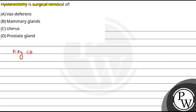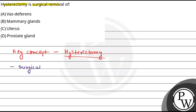So, if we talk about the concept of this question, that will be Hysterectomy. Basically, if we open Hysterectomy, we can say that this is a surgical method, like vasectomy and tubectomy. There is a surgical removal of uterus and cervix. The surgical removal of uterus and cervix is called Hysterectomy.